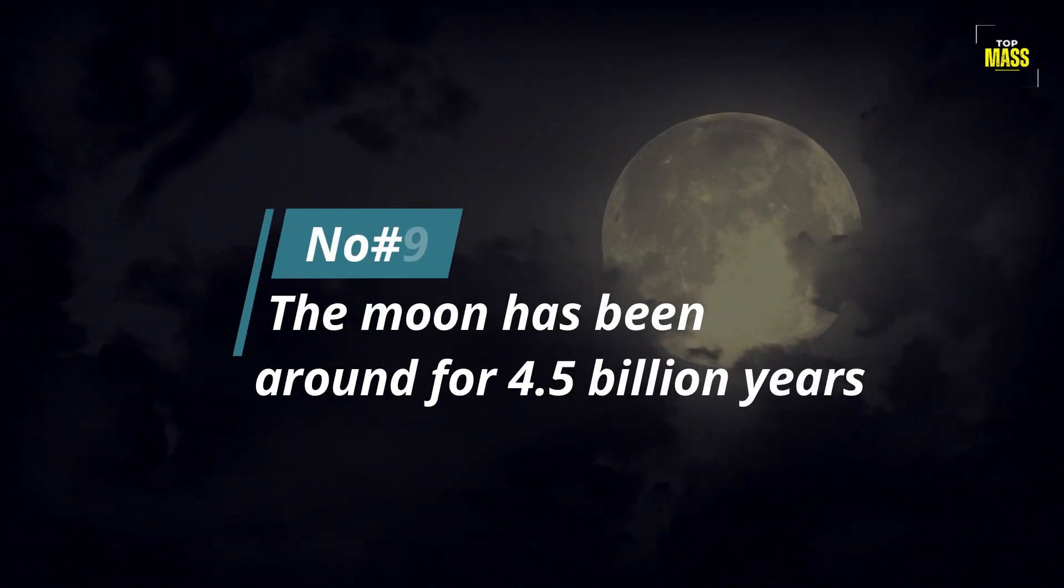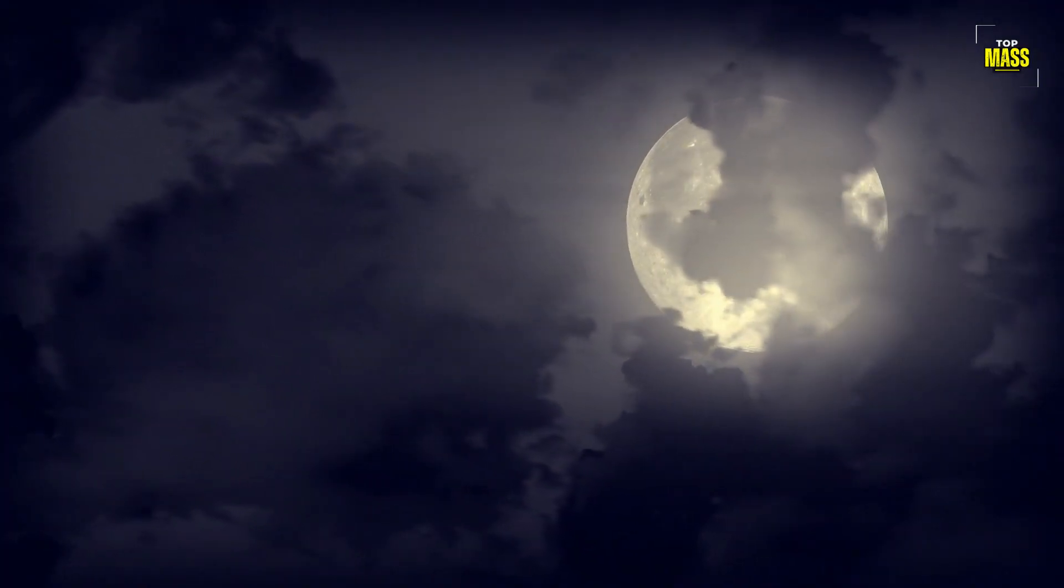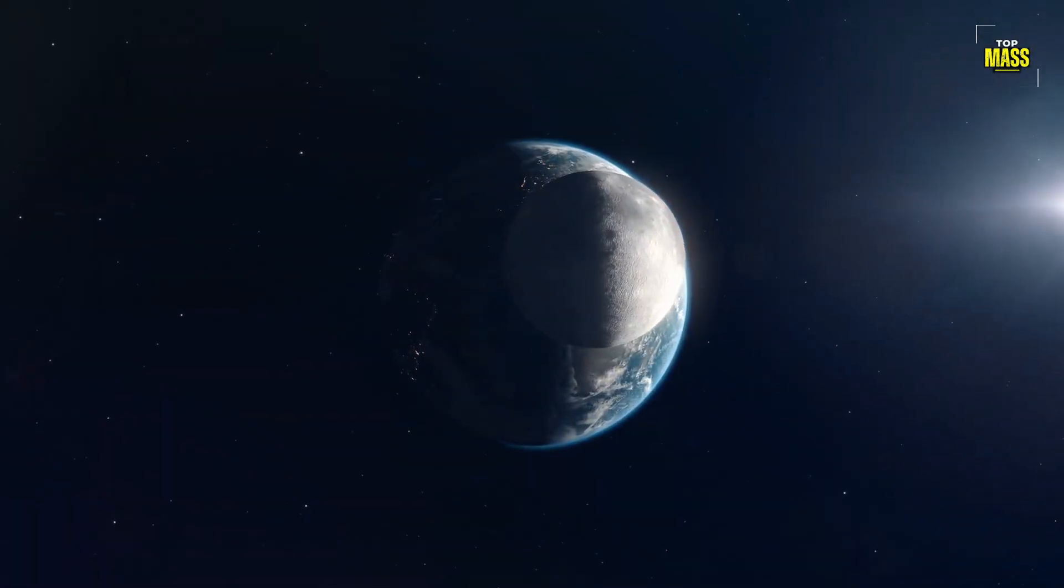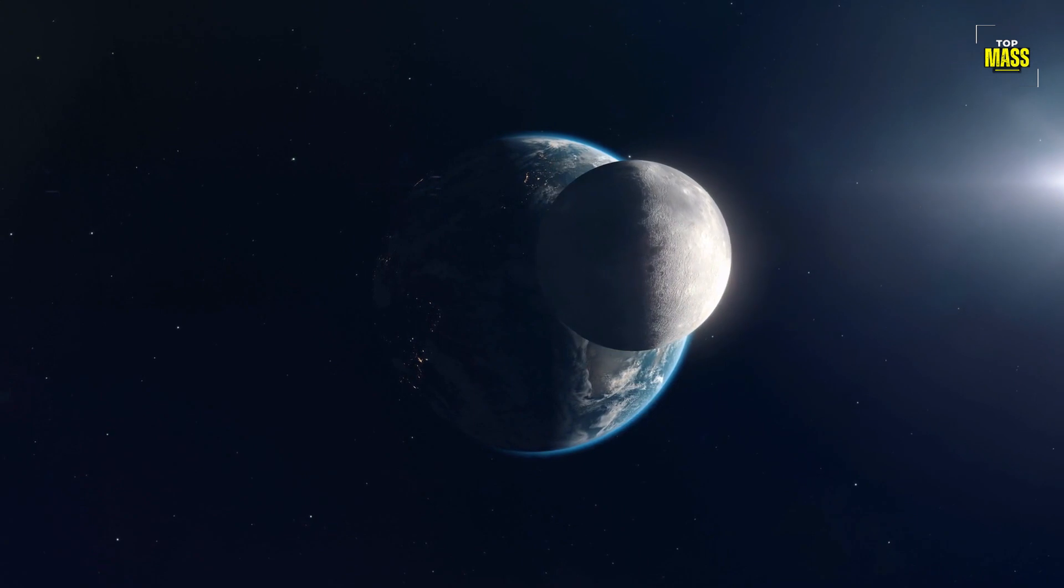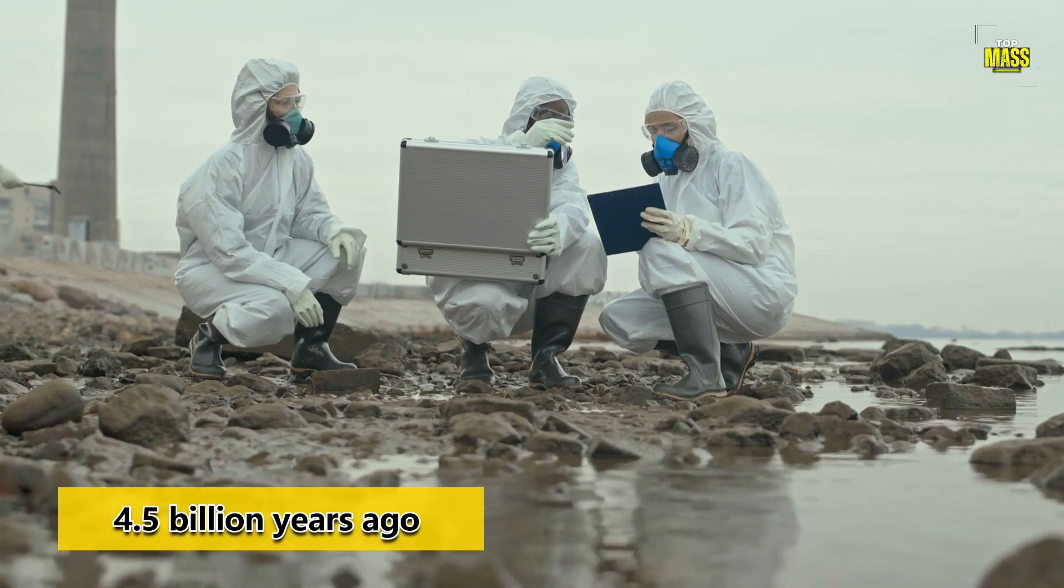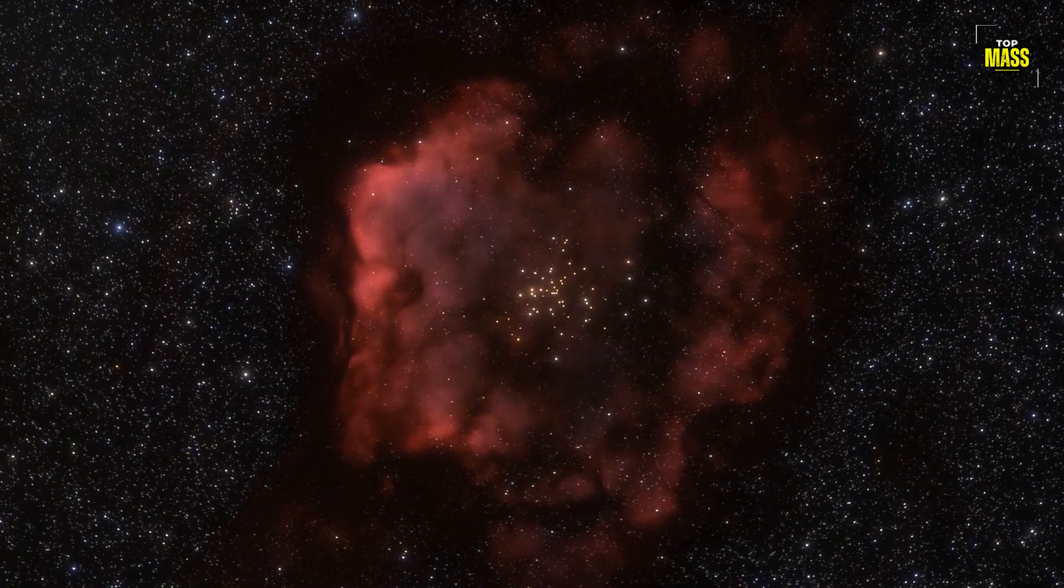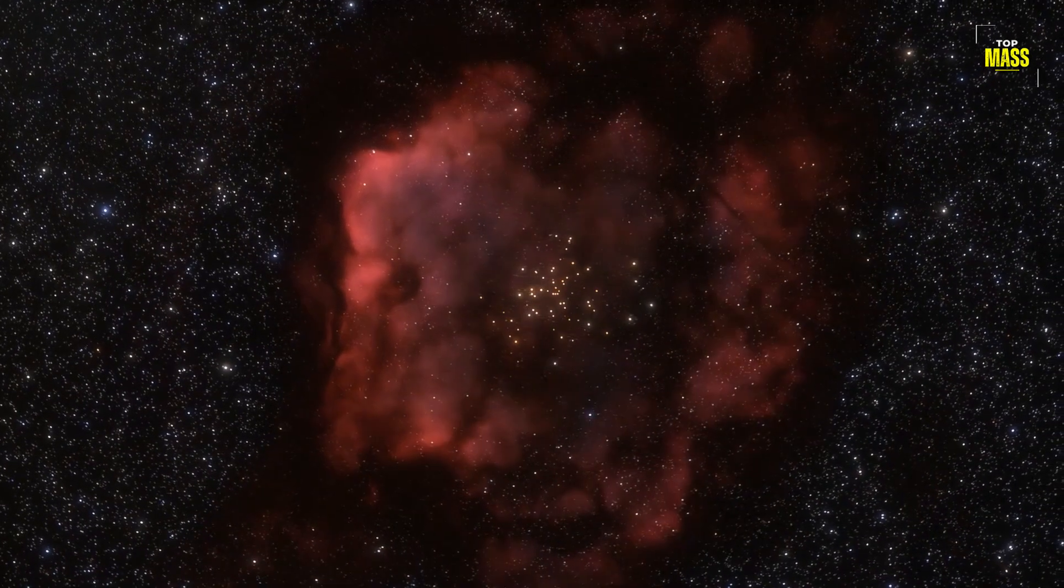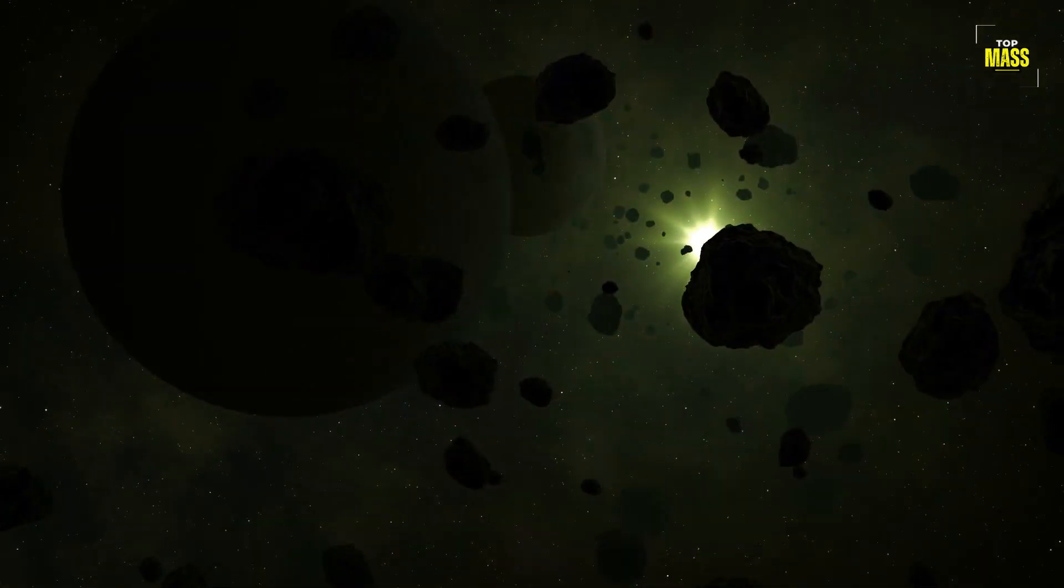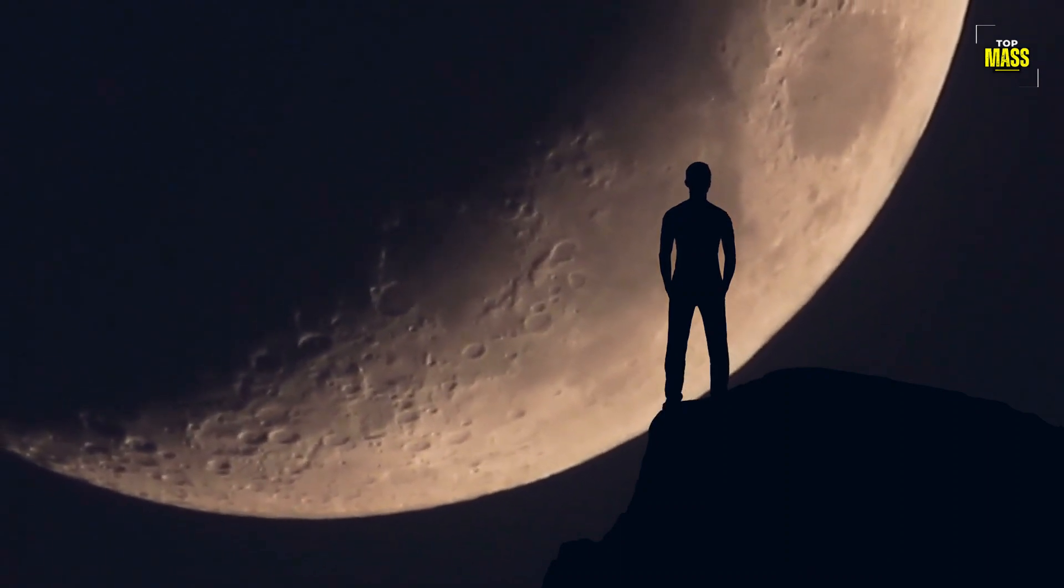Number 9. The Moon Has Been Around For 4.5 Billion Years. The Moon has been an object of fascination for humans since the dawn of time. It's hard to imagine our world without it, yet few people know that the Moon is almost as old as Earth itself. Scientists believe that the Moon was formed about 4.5 billion years ago when a Mars-sized object collided with Earth. Despite its proximity and significance in human culture, there are still many mysteries surrounding the Moon.